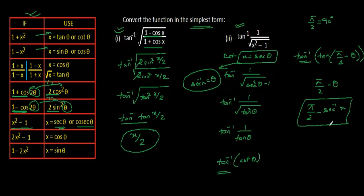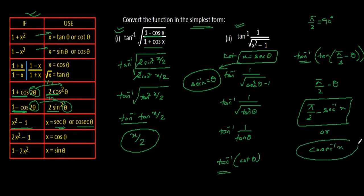Or we know one more formula: pi by 2 minus sec inverse x is equal to cosec inverse x. So we can write this also. This is also one of the answers of this given question.